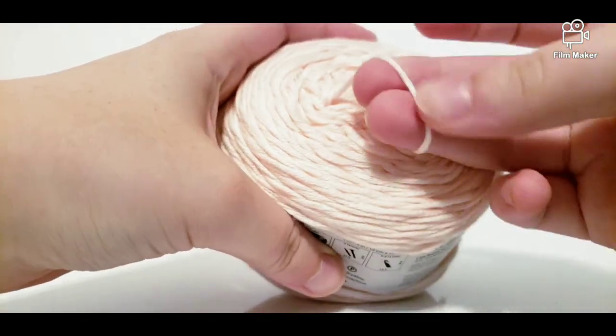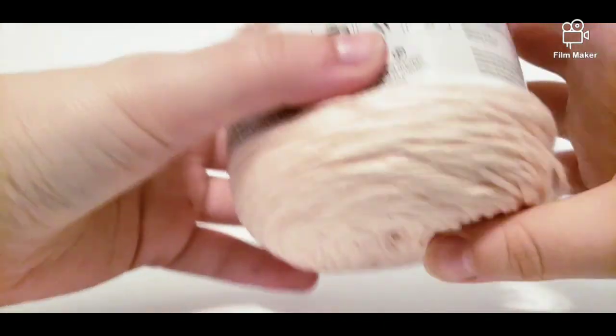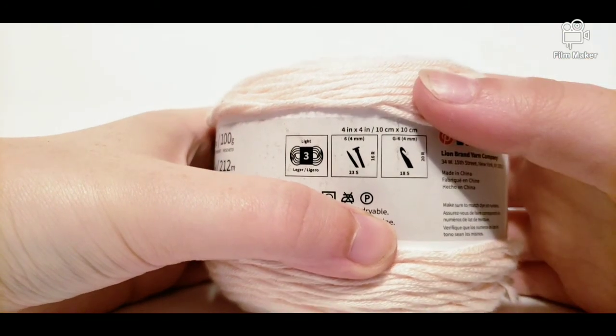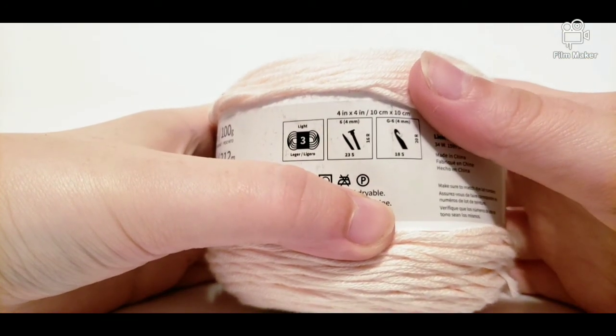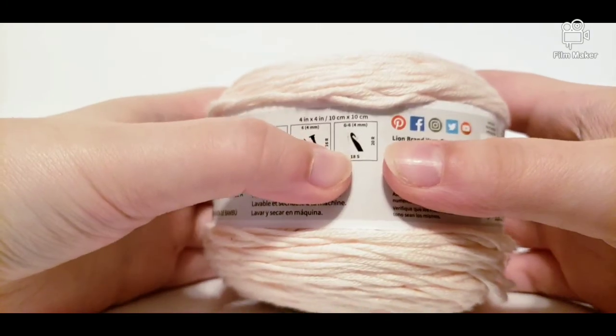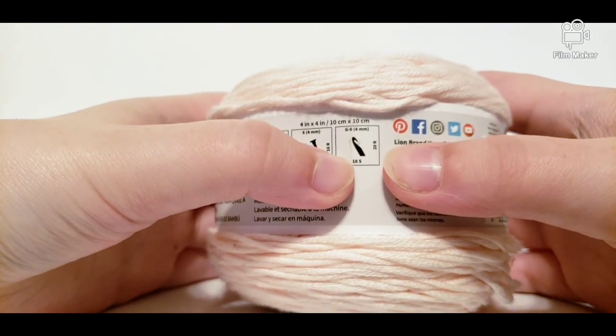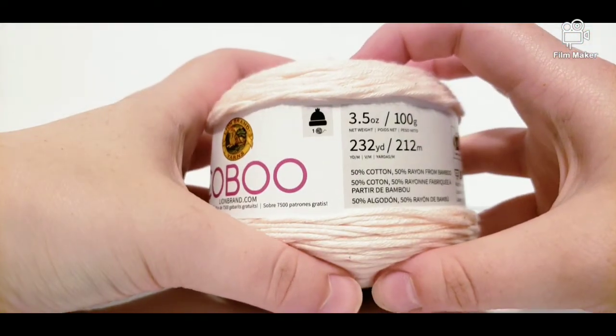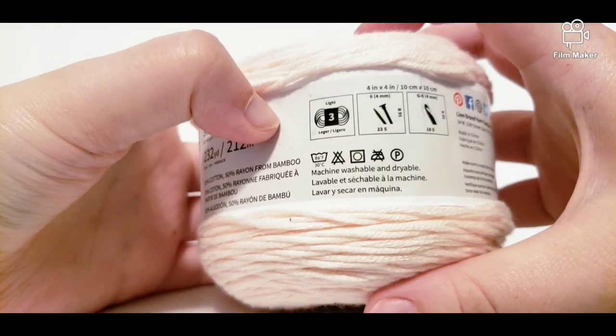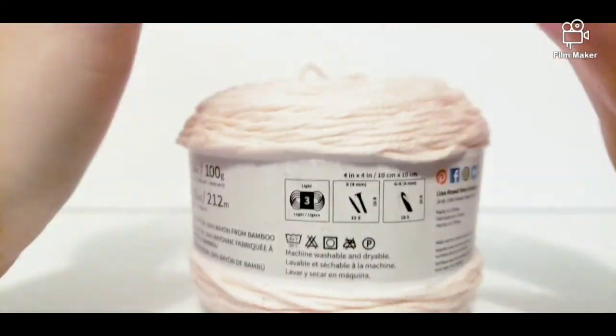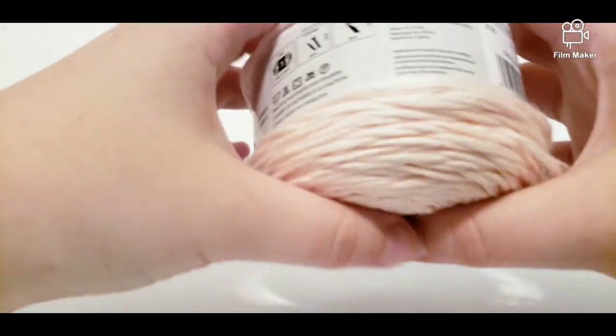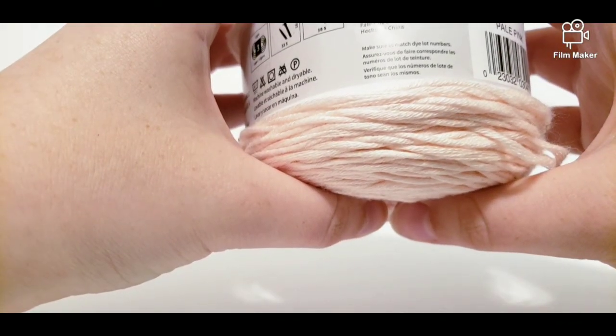It is considered a number three weight. If you wear a size G, it's a 4 millimeter crochet hook. It says that it is machine washable and dryable but I always recommend handwashing and laying your garments flat to dry if you make crochet or knitted things.